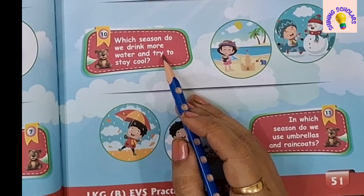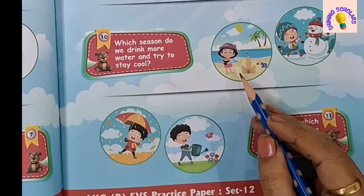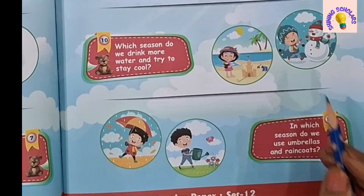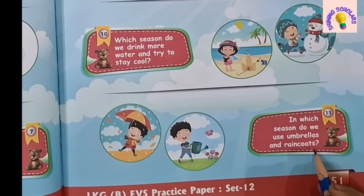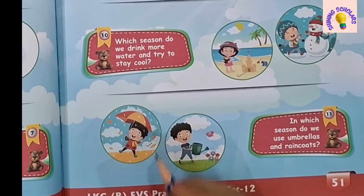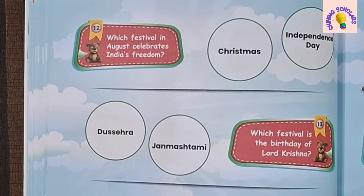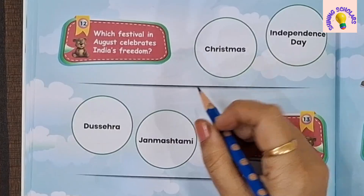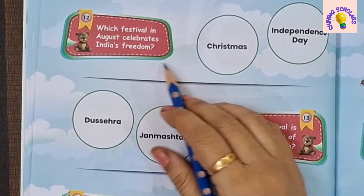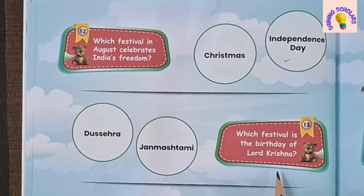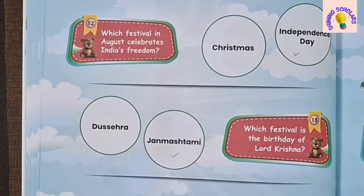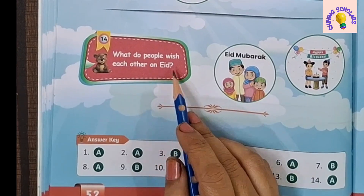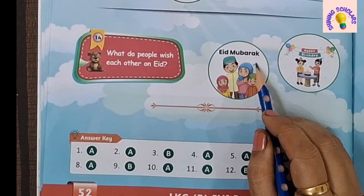Which season do we drink more water and try to stay cool? Summer season. In which season do we use umbrellas and raincoats? Rainy season. Which festival in August celebrates India's freedom? Independence Day. Which festival is the birthday of Lord Krishna? Janmashtami. What do people wish each other on Eid? Eid Mubarak. And at the end is the answer key.